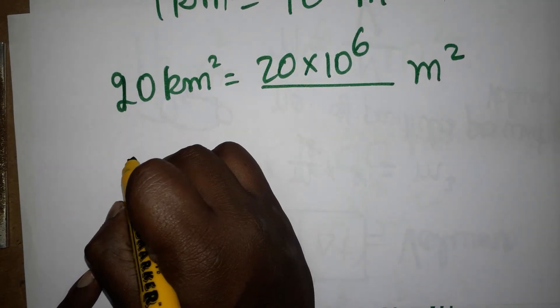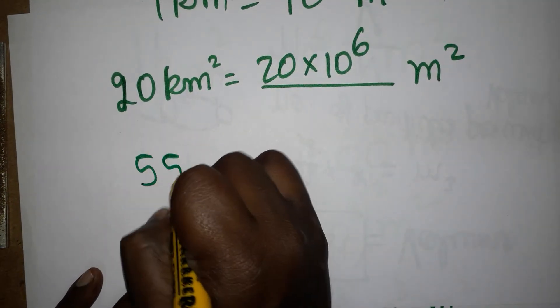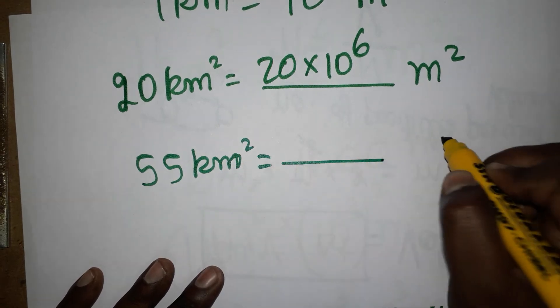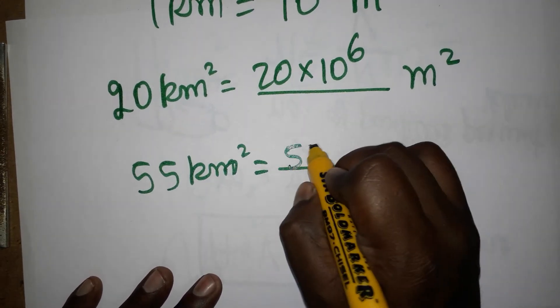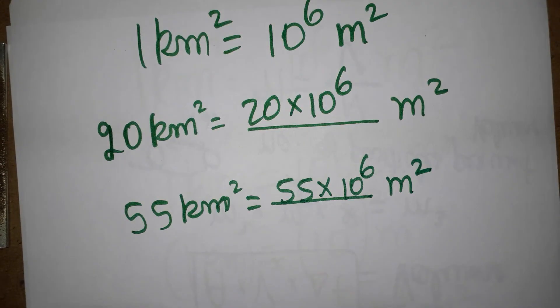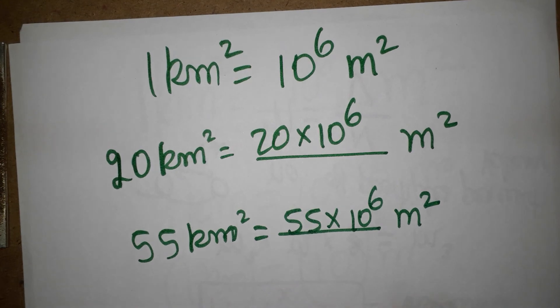In case we have 55 kilometer square, so dash meter square, so 55 into 10 power 6 meter square. Thank you for watching my video. If you like my channel, please subscribe.